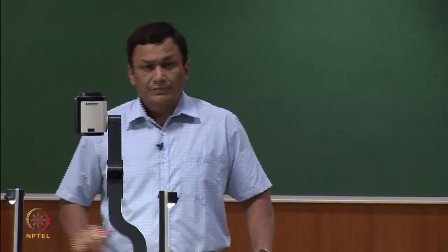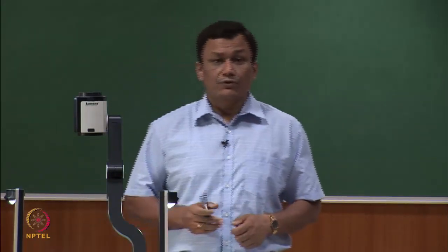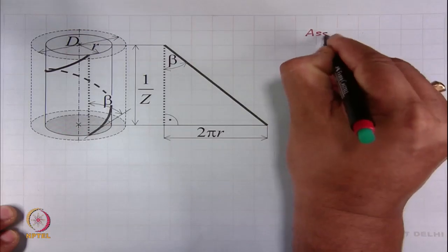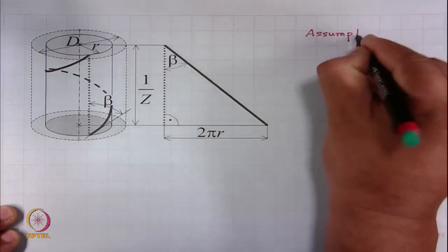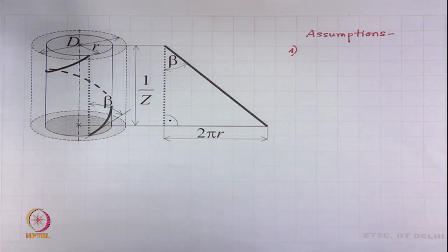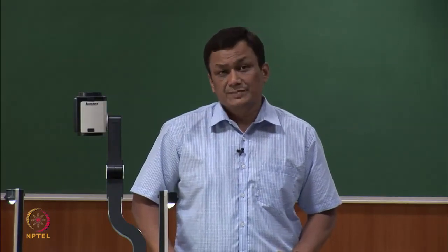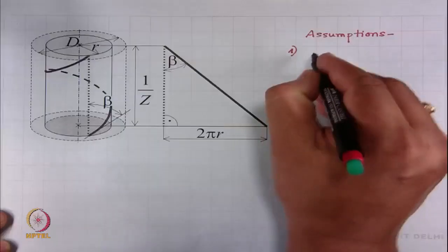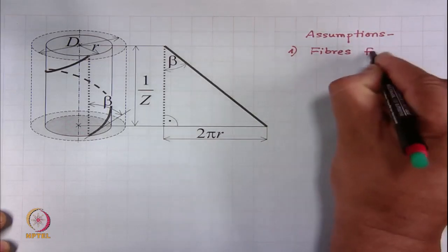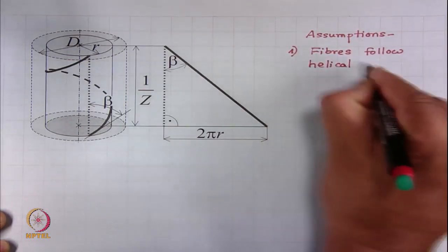The helical model of fibres in yarns is based on four important assumptions. The first three are very general assumptions, and the fourth one is a very special assumption. The first assumption: fibres follow a helical path in the yarn.